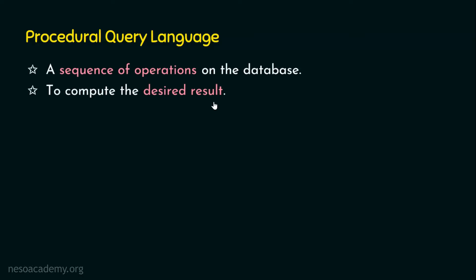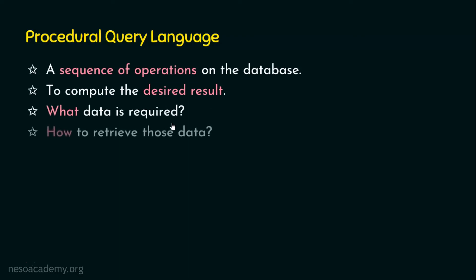What makes the difference between procedural and non-procedural query language? In a procedural query language, we write the query in such a way that we mention what data is required from the database, and we also mention how to retrieve those data. That query contains information about both what data is required and how to retrieve it.